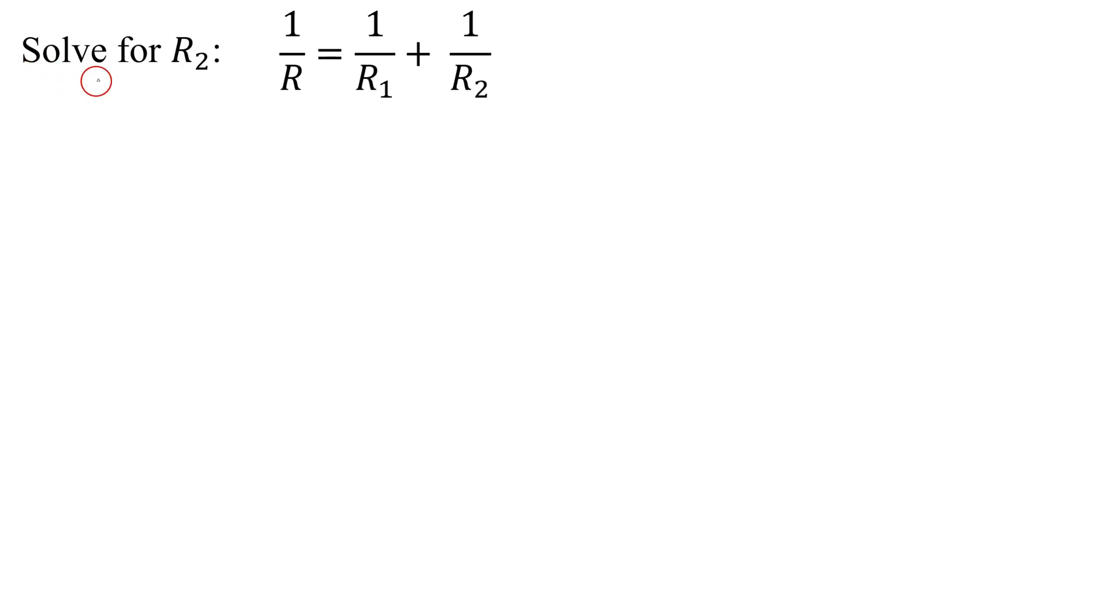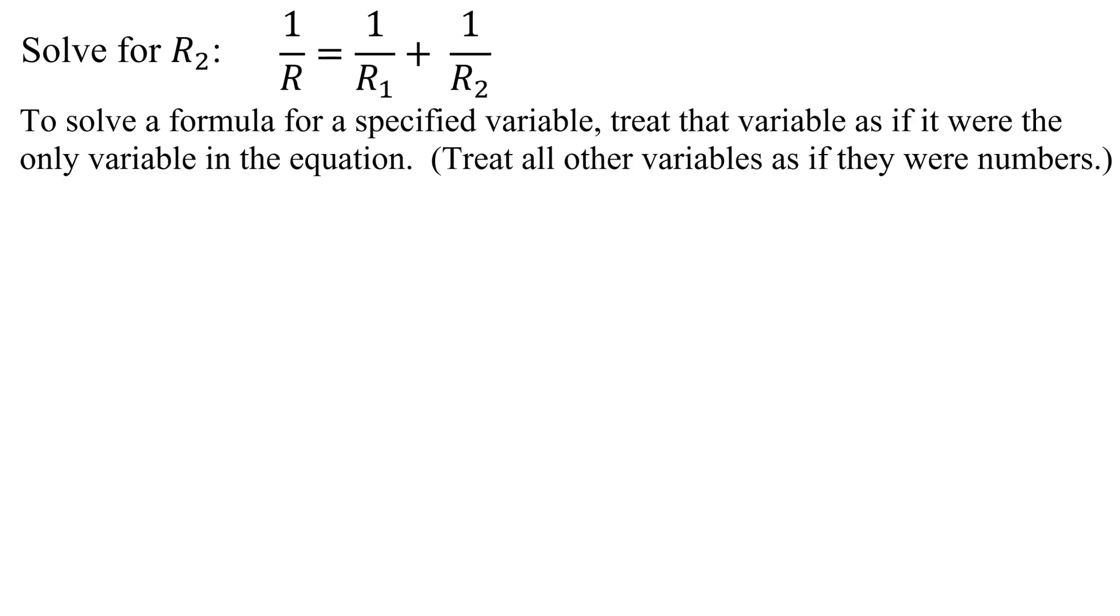In this example, I need to solve for R sub 2 in this equation here. In fact, this equation or formula comes from physics from finding the resistance in a parallel circuit. So quickly reviewing these types of problems. To solve a formula for a specified variable, we need to treat that variable as if it were the only variable in the equation. Treat all the other variables as if they were numbers.